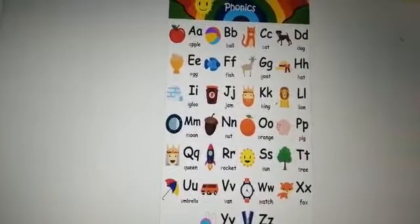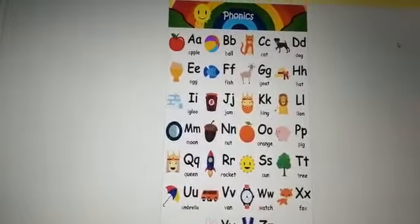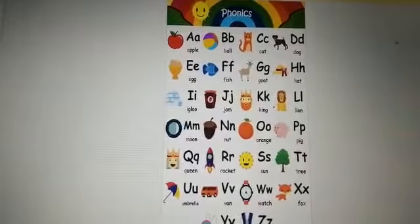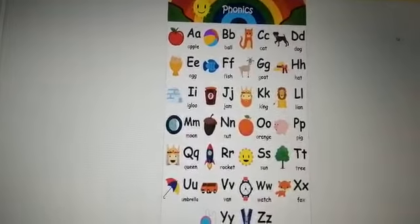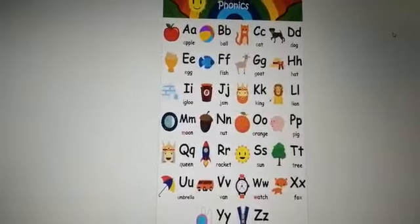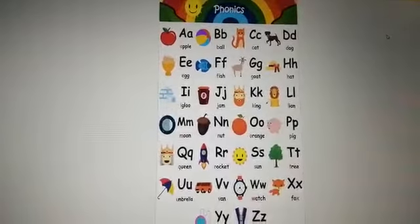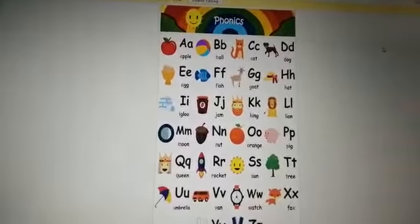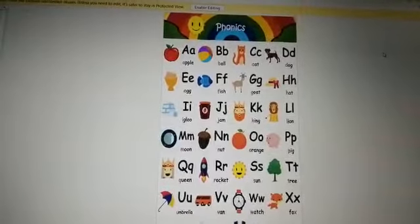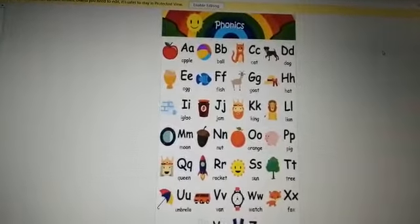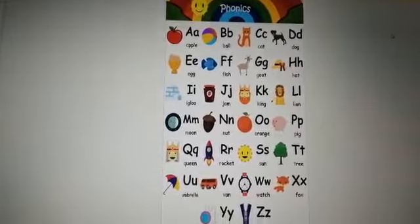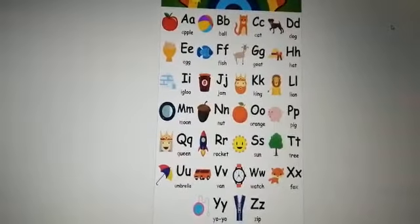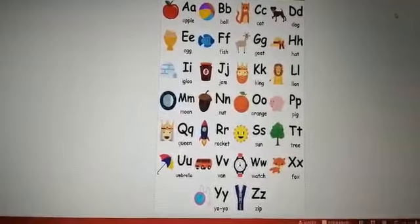Q for queen, sound Q. R for rocket, sound R. S for sun, sound S. T for tree, sound T. U for umbrella, sound U. V for van, sound V. W for watch, sound W. X for fox, sound X. Y for yo-yo, sound Y. Z for zip, sound Z.